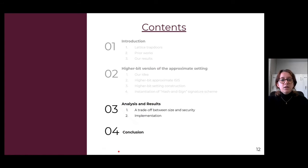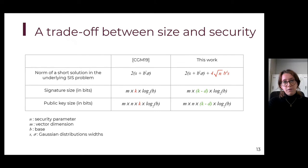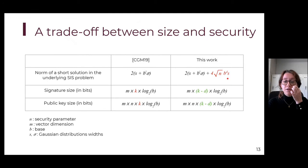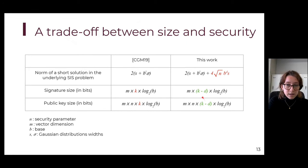We need to observe the trade-off implied by the higher-bit approximate setting, which is due to the increase in the approximation error. This error ends up in the reduction as an increase in the norm of the short solution in the underlying SIS problem — you can see the added term in red. This decreases our security. However, we also see the impact on object sizes, which gives us better sizes for signatures and public keys. So we really have a trade-off between size and security.